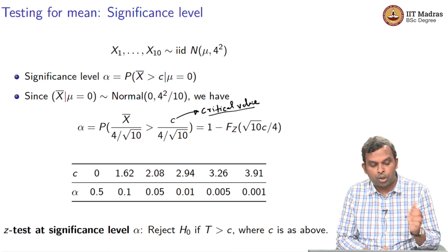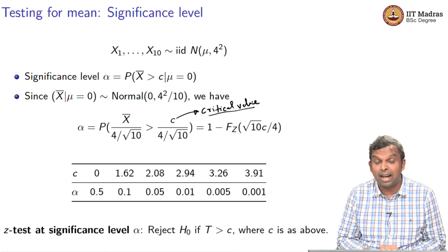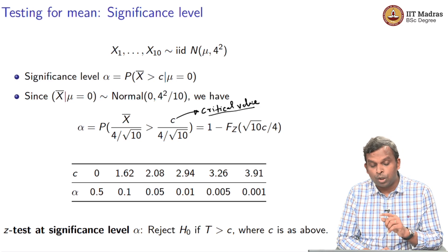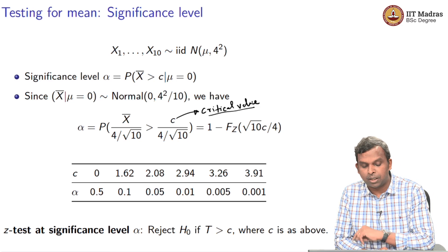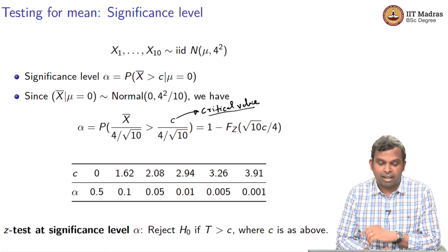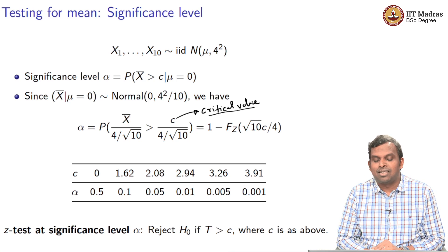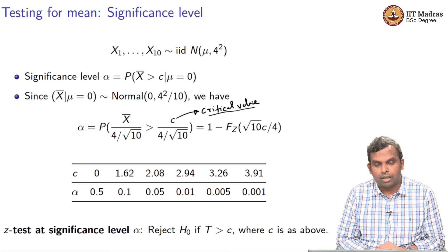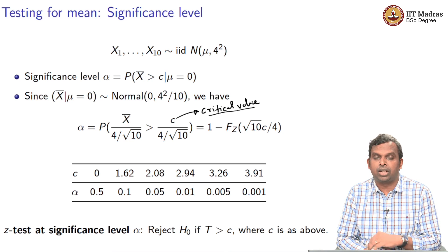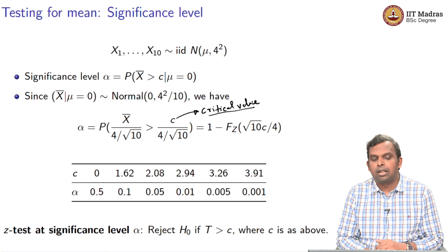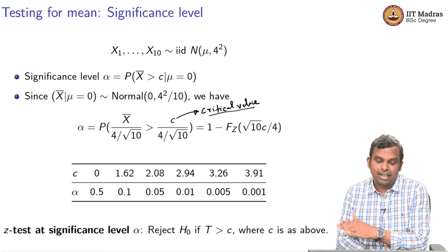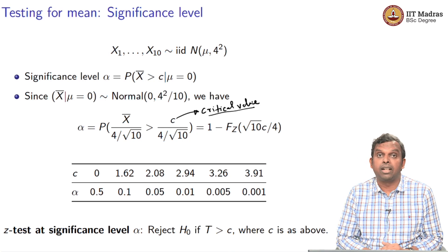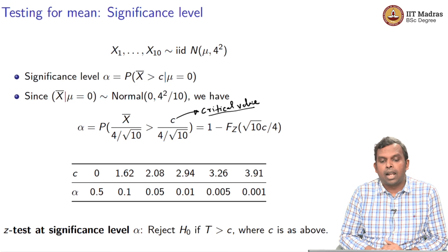When you want to do a Z test at a particular significance level alpha, you go and pick the corresponding C, which is the critical value. So if your test statistic goes above the critical value in a right-sided test, you end up rejecting the null.